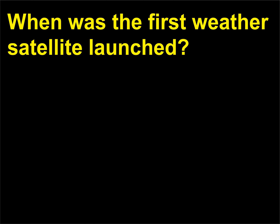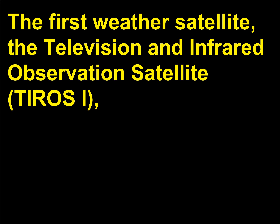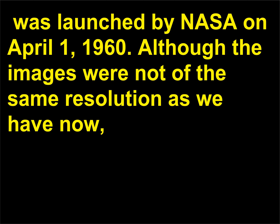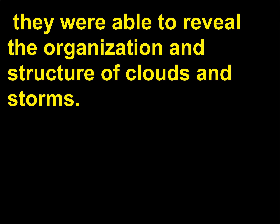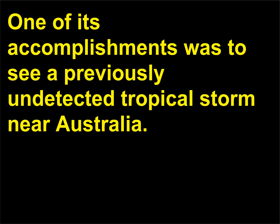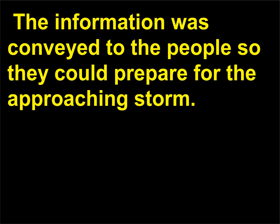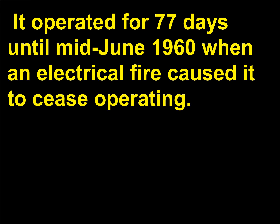When was the first weather satellite launched? The first weather satellite, the Television and Infrared Observation Satellite, TIROS-I, was launched by NASA on April 1, 1960. Although the images were not of the same resolution as we have now, they were able to reveal the organization and structure of clouds and storms. One accomplishment was detecting a previously undetected tropical storm near Australia, and it operated for 77 days until mid-June 1960 when an electrical fire caused it to cease operating.